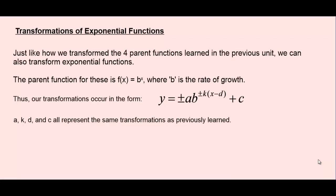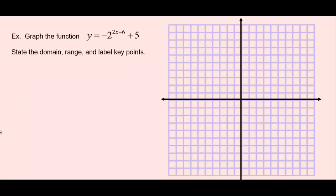Let's look at an example on how we can do a transformation on an exponential function. We want to graph the function y equals negative 2 to the exponent 2x minus 6 plus 5. Once it's graphed, we want to state the domain and range and also label the key points on the graph.